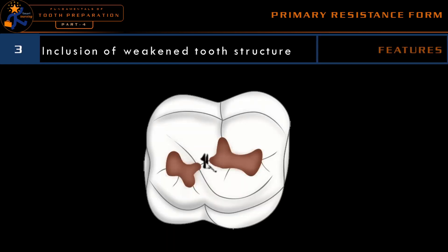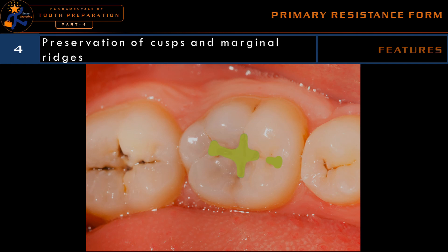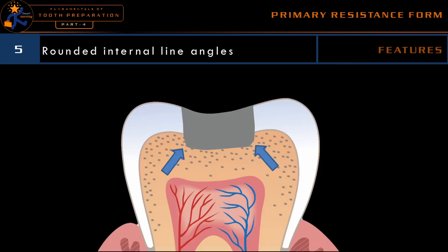The third feature is to include all the weakened tooth structure. Whenever a cusp is weak, we should include it with a cusp-capping procedure. Whenever there is weak tooth structure present between two cavity preparations measuring less than 0.5 millimeters, it should be included in the cavity preparation. We should always preserve the cuspal and marginal ridge strength. The marginal ridge of a molar after cavity preparation should be at least 2 millimeters in width, while for a premolar it should be at least 1.6 millimeters in width.